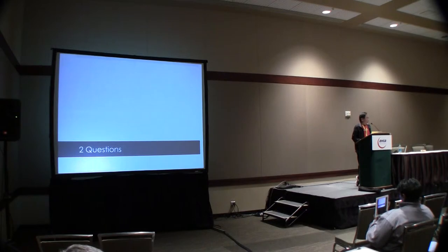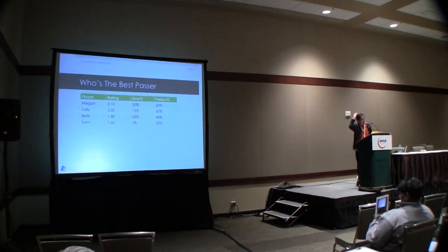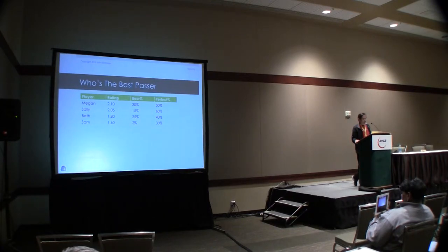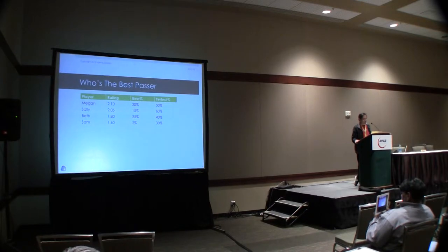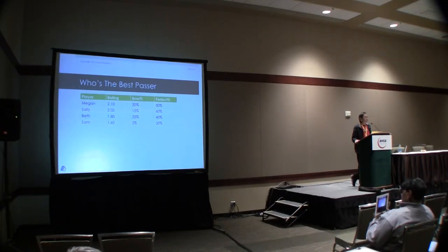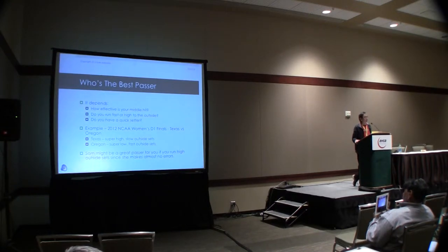I'm going to have a series of questions. The first one is: who's the best passer? At the top you've got Megan, rated 2.1, with 20% errors and 50% perfect. Sally is 2.05, 15% errors, 60% perfect. Beth is 1.80, 25% error, 40% perfect. And Sam at 1.60, 2% error, 30% perfect. So who's the best passer? The answer is: it depends.